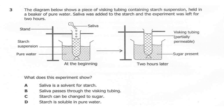Question 3. The diagram below shows a piece of visking tubing containing a starch suspension held in a beaker of pure water. Saliva was added to the starch and the experiment was left for two hours. What does the experiment show? A: saliva is a solvent for starch. B: saliva passes through the visking tube. C: starch can be changed to sugar. D: starch is soluble in pure water. So what's the correct answer?